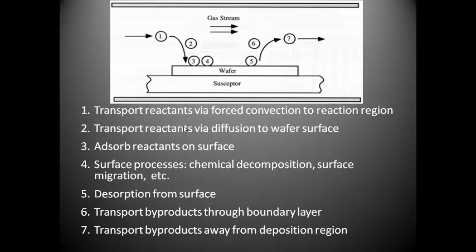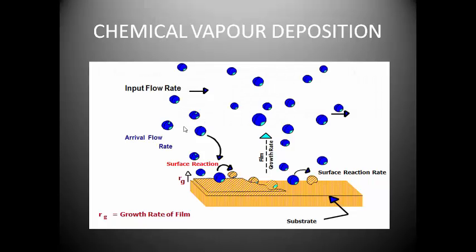Transport by-product away from the deposition region. This figure explains very well about the chemical vapor deposition — that's why I have included this figure. It shows the input flow rate of the gases which are going to react on the surface of the workpiece. And film growth rate is in perpendicular direction to the workpiece surface.